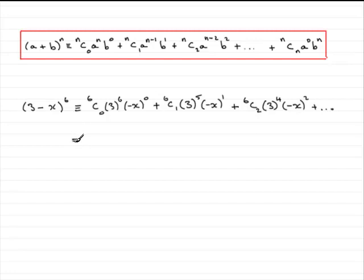So all you need to do now is just type this out on a calculator, 6C0 on your calculator times 3 to the power 6. Anything to the power 0 is 1, so if you do this, you should find 6C0 is 1, 3 to the power 6 gives you 729. So you've got 729 for the first term.